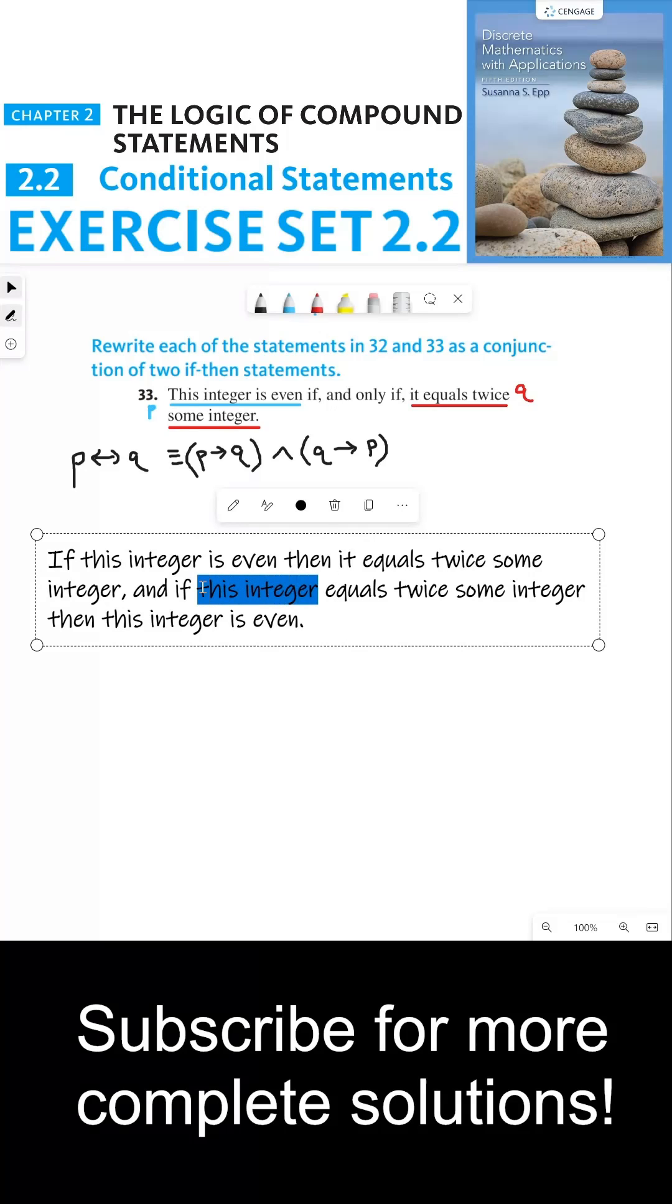Now if you notice, I didn't put the word it here. And that's because in this independent clause, it's unusual to introduce a noun with a pronoun like it. And so what is it? It is, in this context, this integer. And so when we say equals twice some integer, when I say this integer, I'm referring to this integer. That's the best way I can structure this biconditional as a conjunction of two if-then statements.